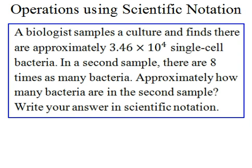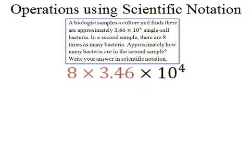In a second sample, there are 8 times as many bacteria. So approximately how many bacteria are in the second sample? And I want you to write your answer in scientific notation. Now the key here is the word 8 times, which is going to tell us that we're going to multiply 3.46 times 10 to the 4th times 8.